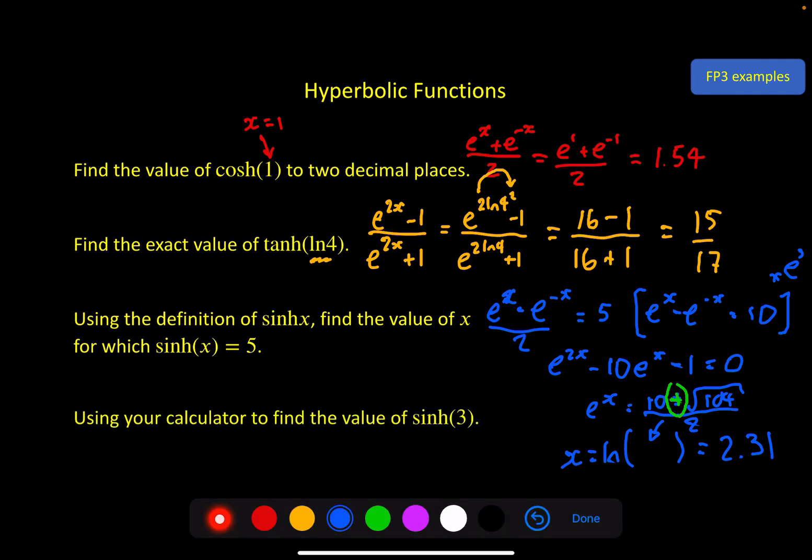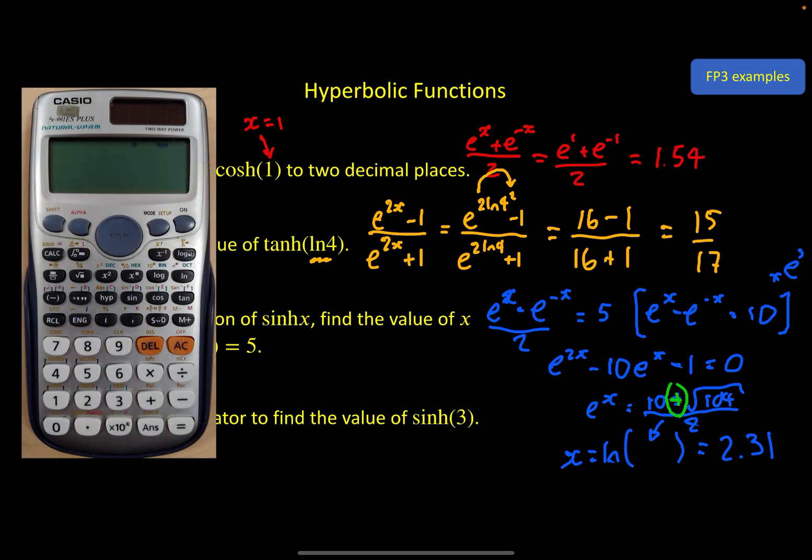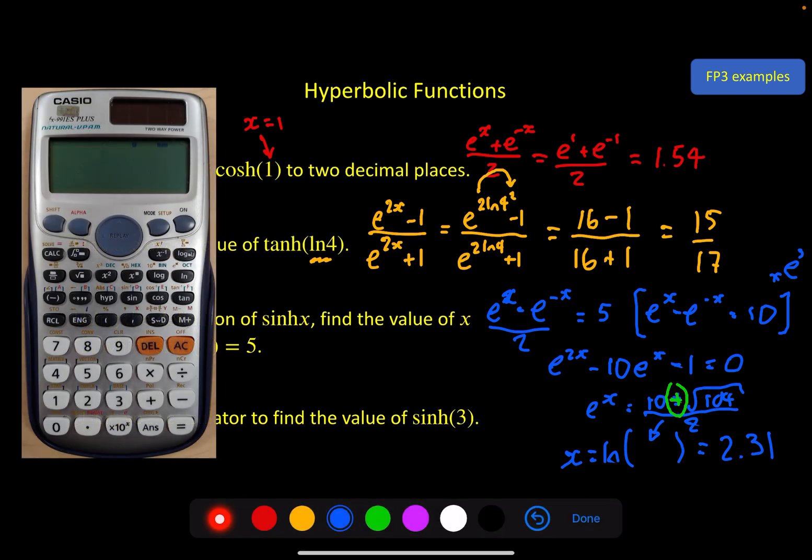Okay the final one. Using your calculator, find the value of sech 3. Now your calculator can do this. Depending on what type of calculator you've got, this may or may not be useful, but if you've got a calculator like this what I wanted to quickly do was highlight the button.